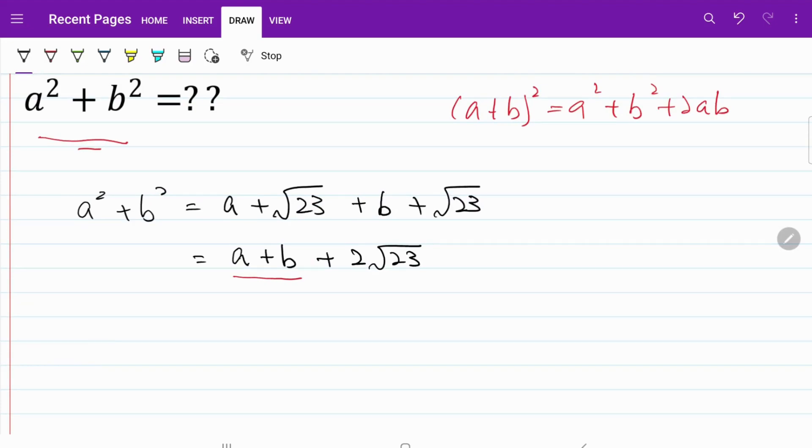Instead, what I'm going to do is I'm going to go with a² - b². Using the values that we are given within the question, a² - b² is simply equal to (a + √23) - (b + √23).